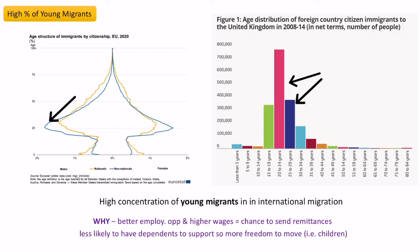Why do we get younger people migrating? First of all, they don't have any dependents — they're less likely to have kids or be married — so they've got more freedom to move. But more importantly, they're moving because they're more likely to get better employment opportunities, make better wages, and therefore send remittances back to their families at home and support them more effectively.